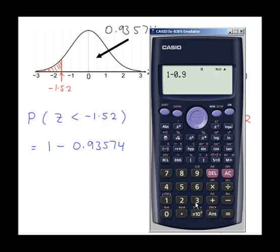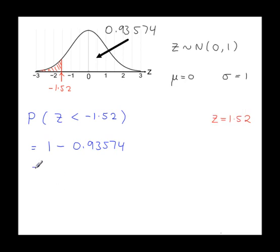So 1 minus 0.93574 will give you 0.06426. And that's the answer. That's your final answer. That's about 6.4%, which looks reasonable for the shaded area.